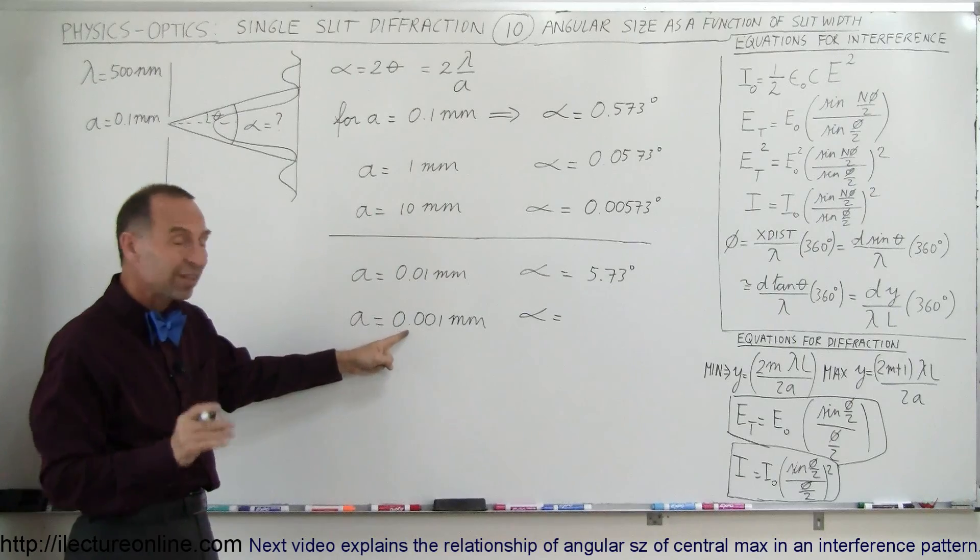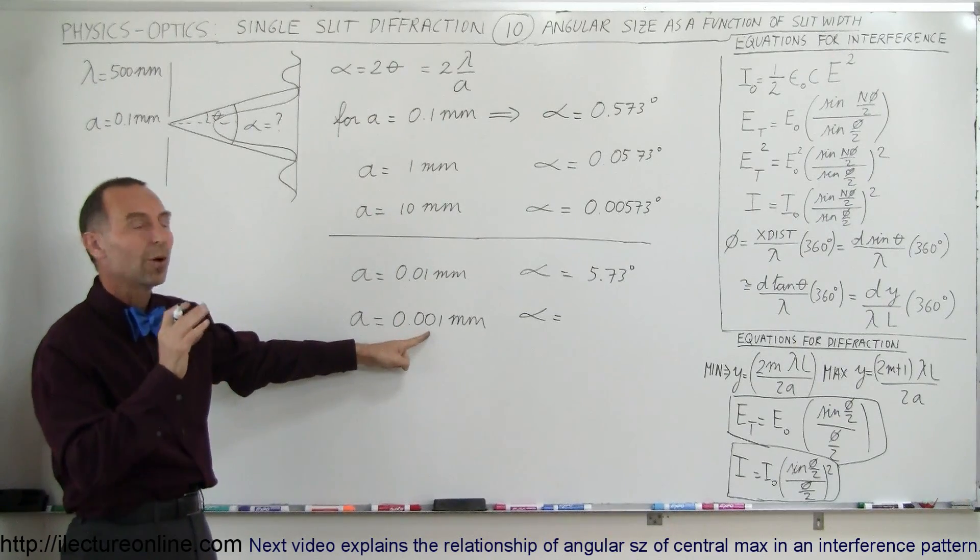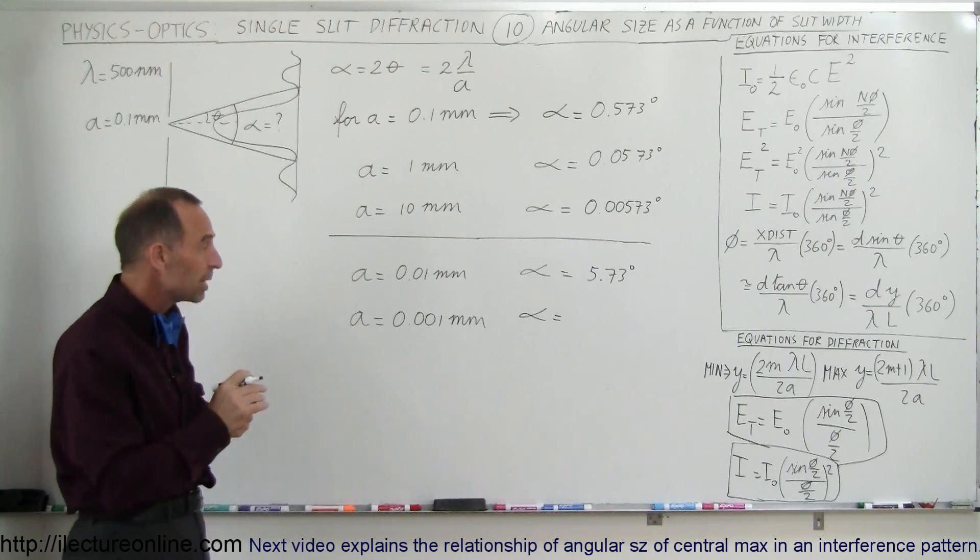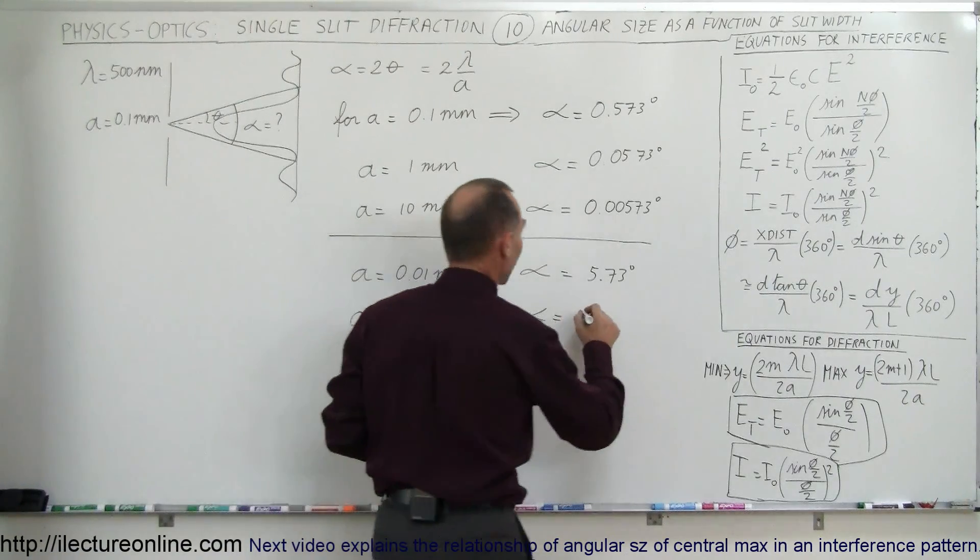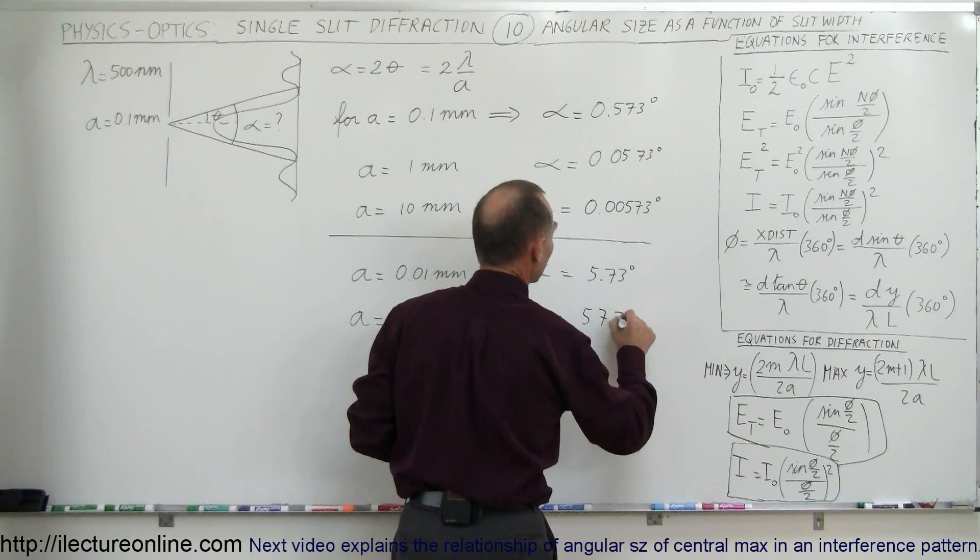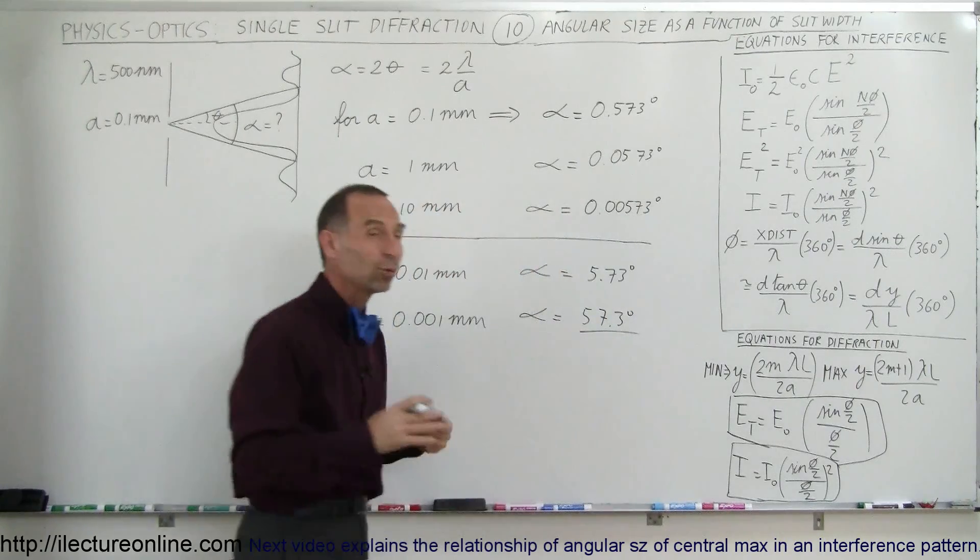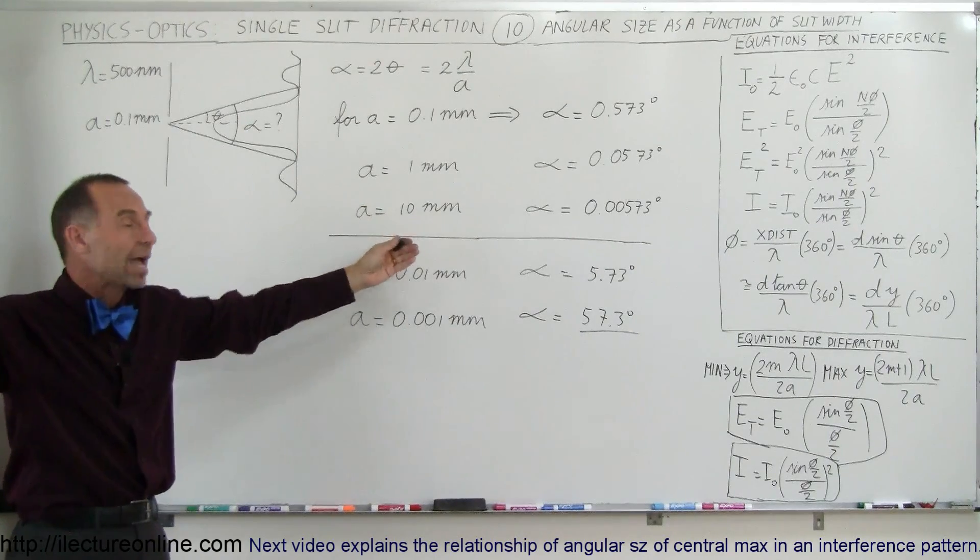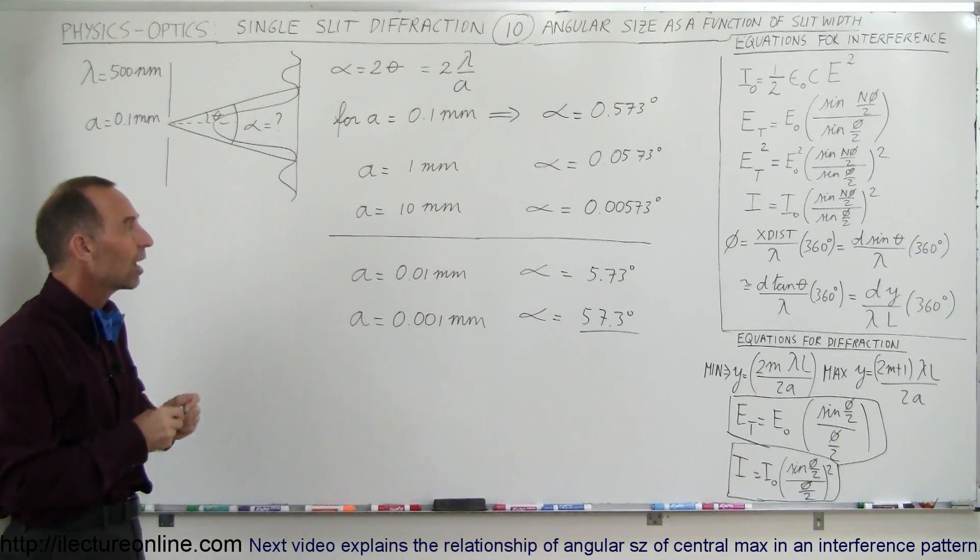And then when the slit width gets really small, down to one thousandth of a millimeter, which is 1 micrometer, then the angular size becomes 57.3 degrees. And then you can see that there would not be much of a diffraction pattern, because the central maximum would take up a huge angle, a very large angular size.